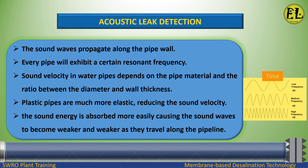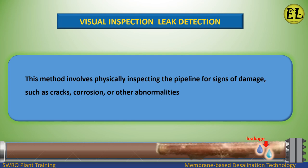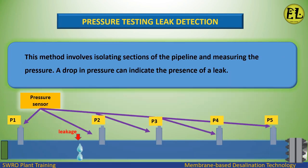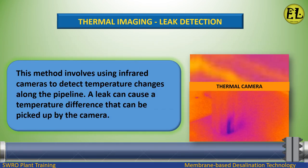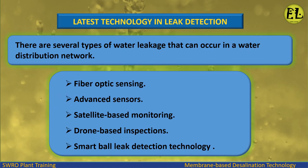Visual Inspection involves physically inspecting the pipeline for signs of damage such as cracks, corrosion, or other abnormalities. Pressure Testing involves isolating sections of the pipeline and measuring the pressure — a drop in pressure can indicate the presence of a leak. Thermal Imaging uses infrared cameras to detect temperature changes along the pipeline; a leak can cause a temperature difference that can be picked up by the camera.